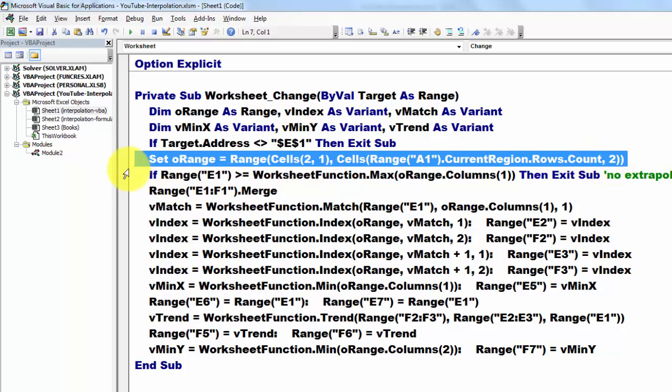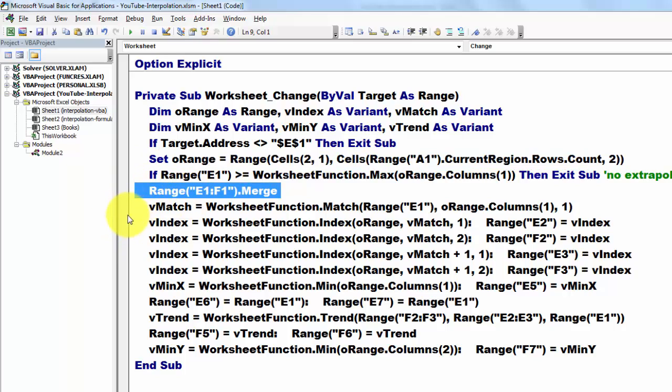If range E1 is greater than or equal to the max, then exit the sub. That means we cannot do extrapolation outside the range of observations. We happen to merge cell E1 and F1. Then we calculate what V-match is by using the worksheet function MATCH, like I showed you before with real functions and formulas. And I think this speaks for itself now.